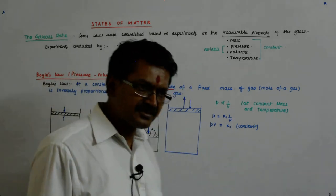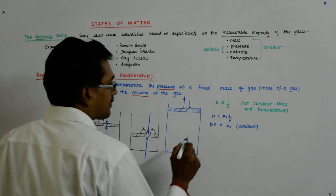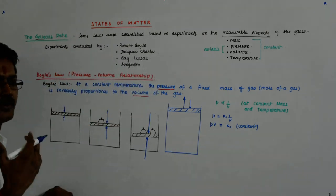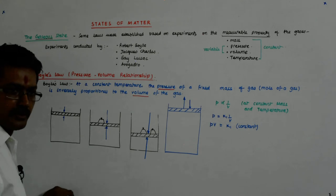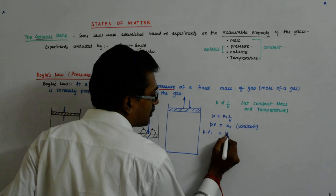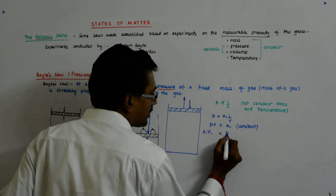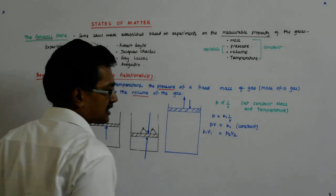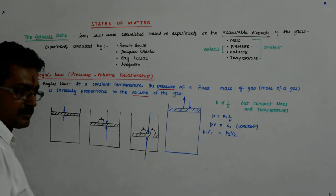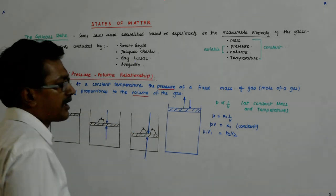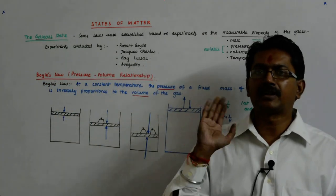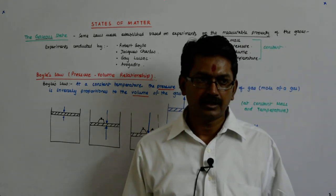In two different situations, when V1 is the volume and P1 is the pressure, and when V2 is the volume and P2 is the pressure, that means P1 V1 equals P2 V2. All these relationships that we are deriving, and will be deriving in the next few classes, are all for an ideal gas.